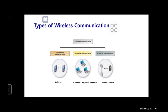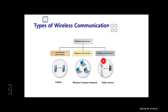There are several types of wireless communication: cellular communications, which can be categorized as point-to-point communication; multipoint communication, an example of which is a wireless computer network; and broadcast communication, which includes radio service or TV broadcasting.